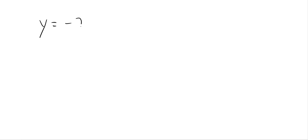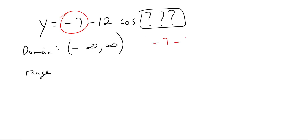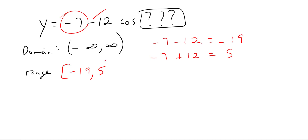Let's try another quick example: y = −7 − 12·cos(whatever). The domain is from negative infinity to positive infinity, because it always is for sine or cosine. For the range, the vertical shift is −7. You go down 12 to get −19, and up 12 to get −7 + 12 = 5. The negative on the amplitude doesn't matter — it still goes 12 in each direction. So the range is from −19 to positive 5, with brackets.